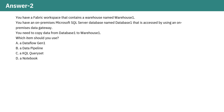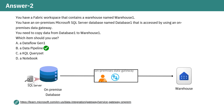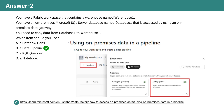You got it. The correct answer is B. A data pipeline. To copy data from an on-premises Microsoft SQL Server database, Database 1, to a Fabric warehouse, Warehouse 1, the best item for this job is a data pipeline in Microsoft Fabric.